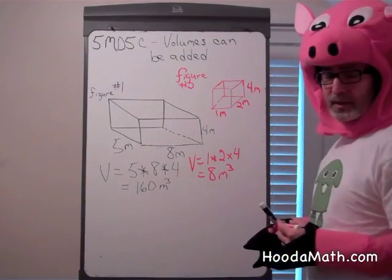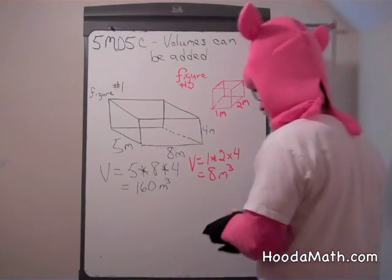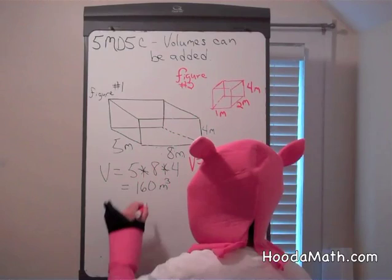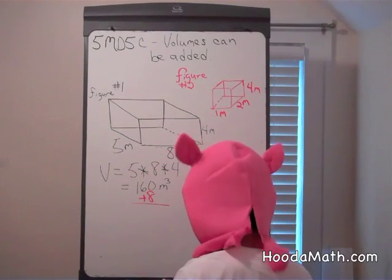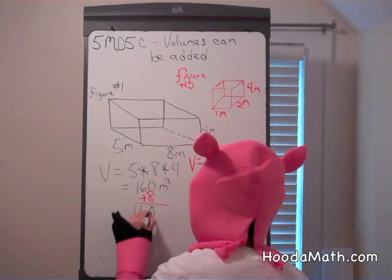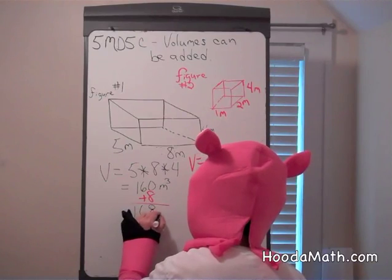Now, if we put these tanks together, what would be their total volume? Well, very easy, you can just add them together. 160 plus eight equals 168 cubic meters.